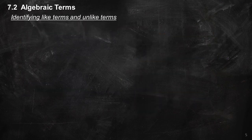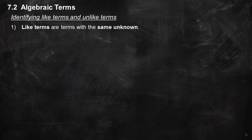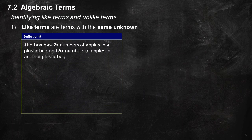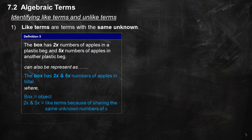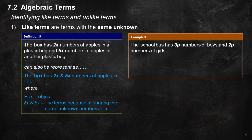Identifying like terms and unlike terms. Like terms are terms with the same unknown. Definition 3: The box has 2X numbers of apples in one plastic bag and 5X numbers of apples in another plastic bag, represented as 2X and 5X numbers of apples in total. Here, 2X and 5X are like terms because they share the same unknown X. Example 3: The box has 3P numbers of boys and 2P numbers of girls. Total number of students equals 3P plus 2P equals 5P.